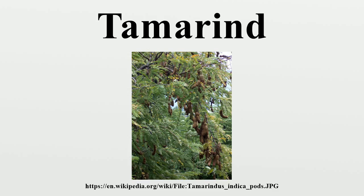Tamarind timber consists of hard, dark red heartwood and softer, yellowish sapwood. It is harvested by pulling the pod from its stalk. A mature tree may be capable of producing up to 175 kg of fruit per year. Veneer grafting, shield budding, and air layering may be used to propagate desirable selections. Such trees will usually fruit within 3 to 4 years if provided optimum growing conditions.